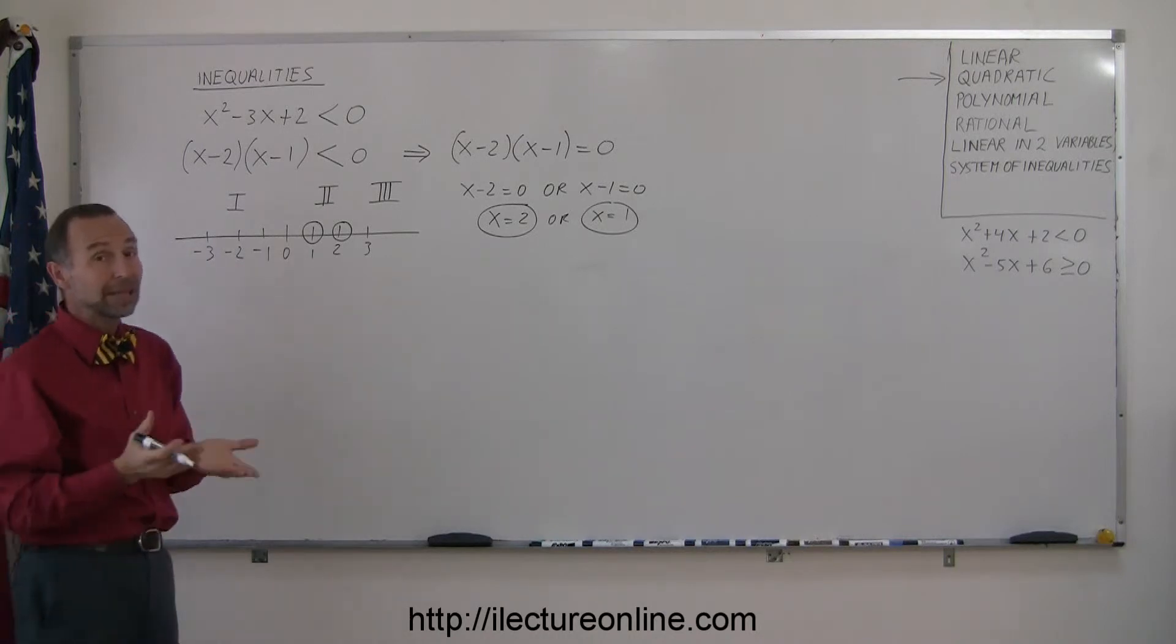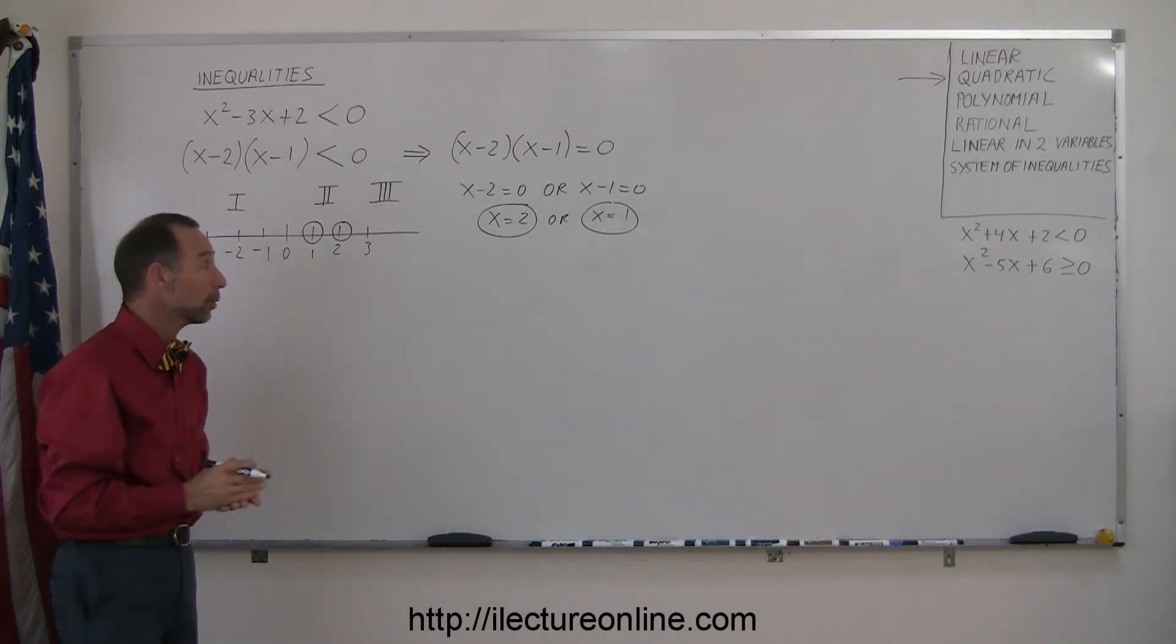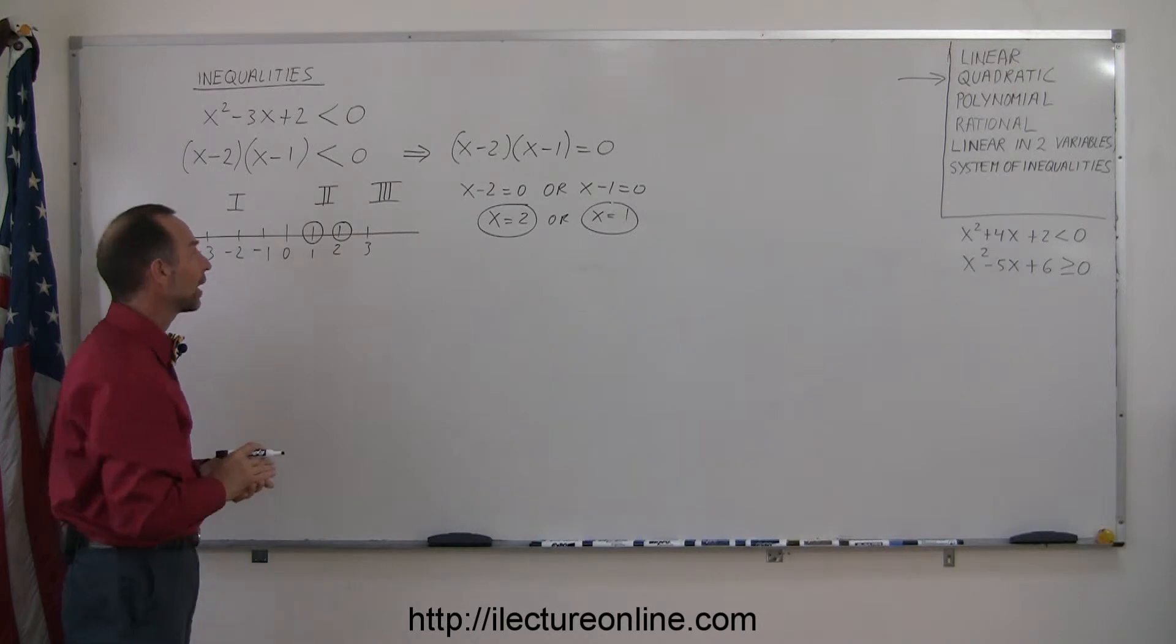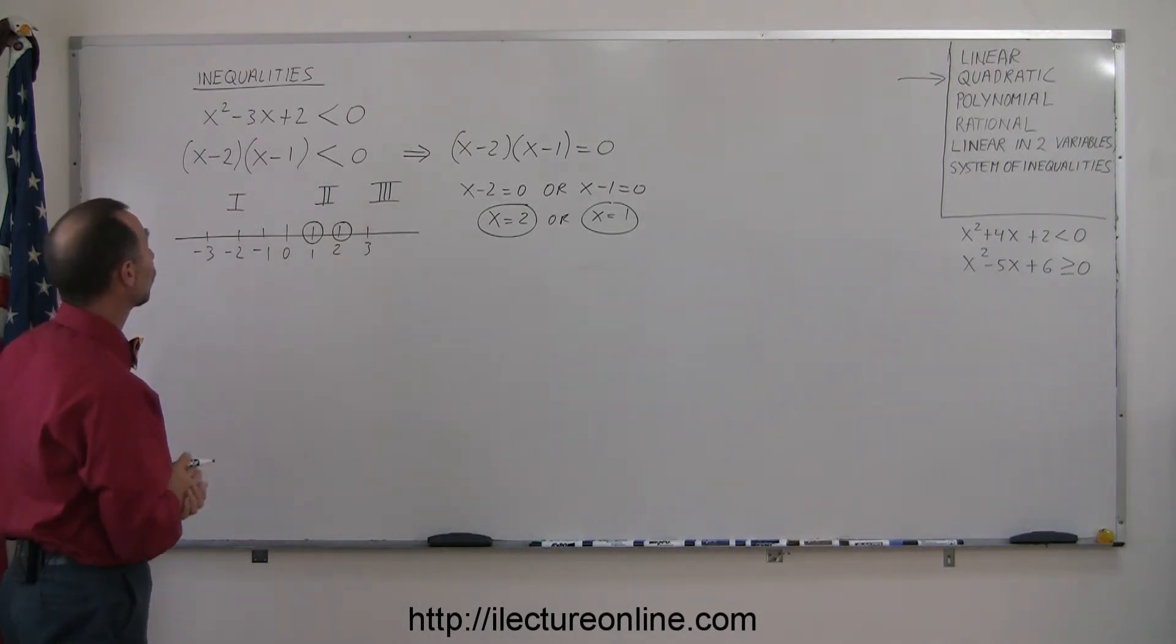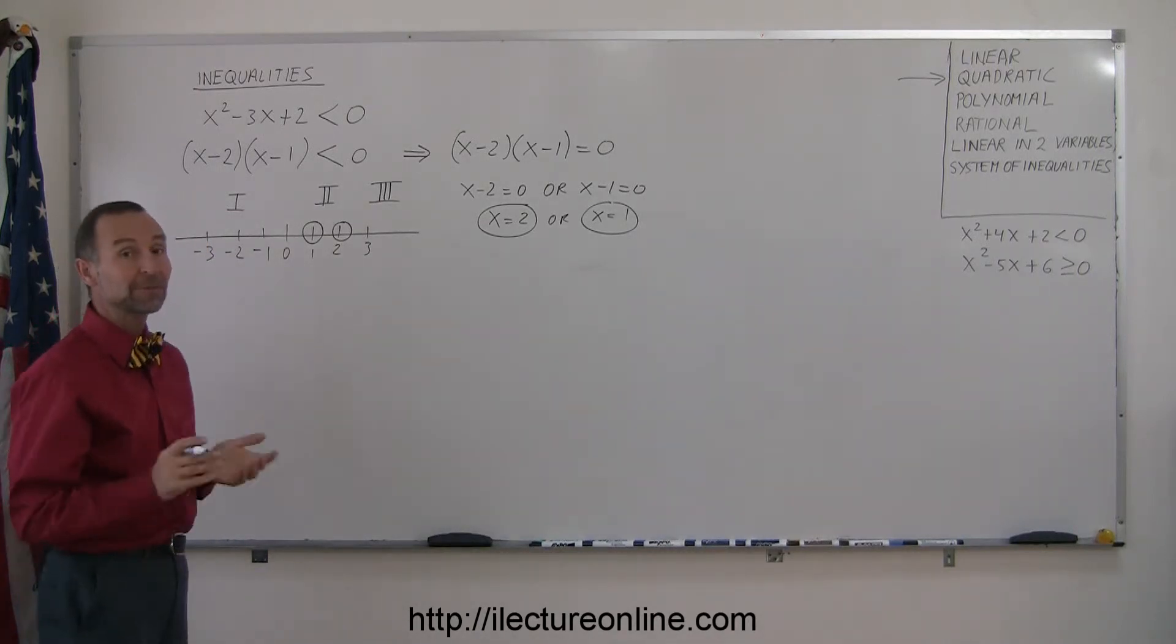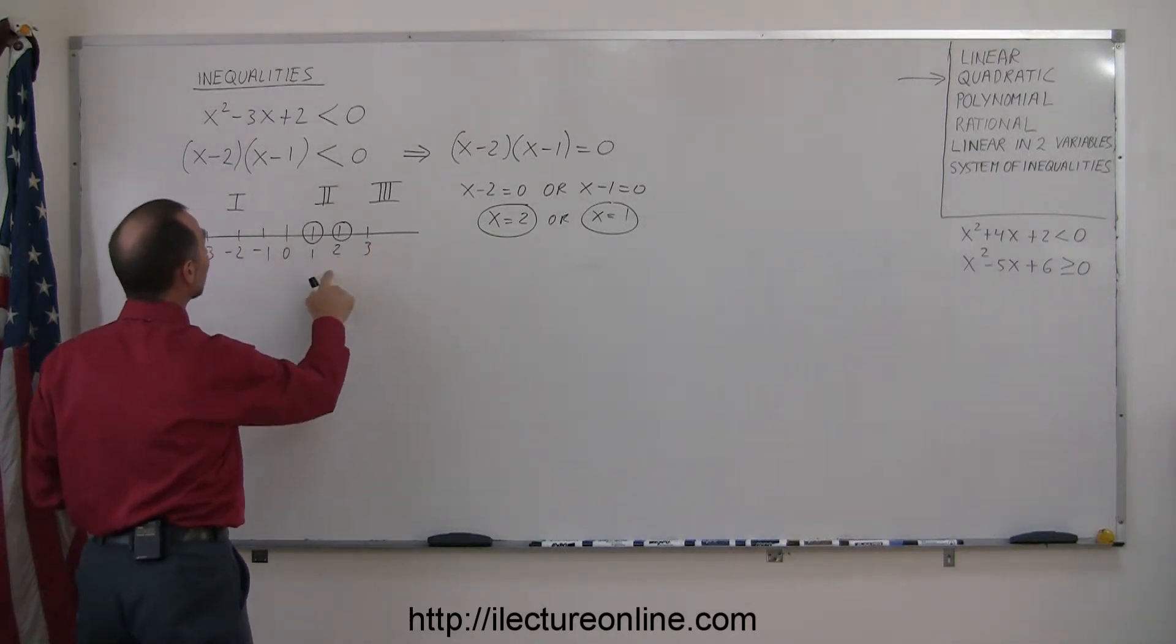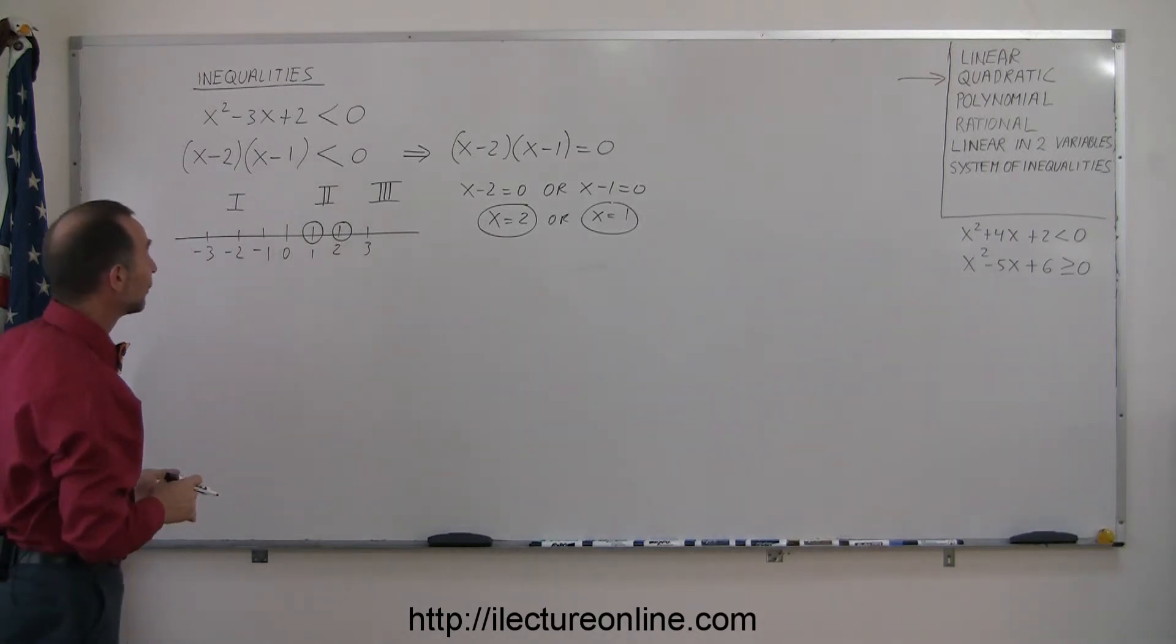Now, any one of these regions could potentially be the solution to this inequality. We don't know yet which ones. It could be 1, or 2, or 3 of them. Although, after a while, you start to realize that it's either 1 or 2, not all 3. Then, to find out which region does belong to the solution of that inequality, you're going to try some test points. You're going to pick a point in each of the three regions and plug it into your original inequality to see if that belongs to the solution.